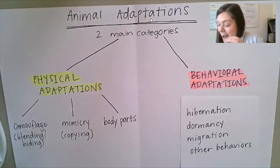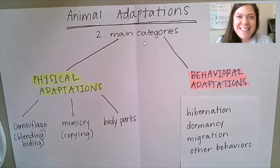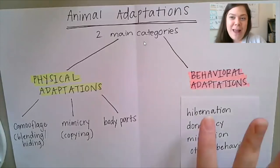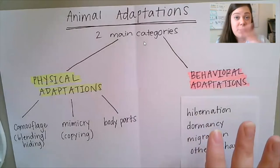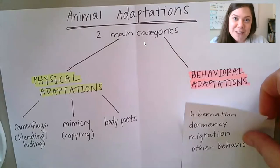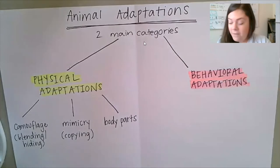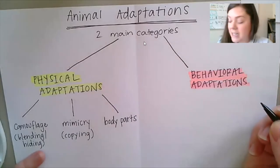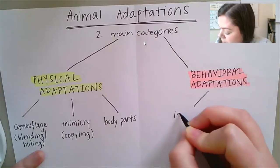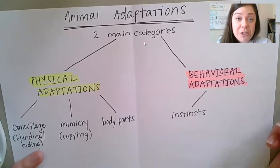Now, it's through a combination of both physical and behavioral adaptations that all living things are able to thrive. Today, we're going to take the idea of behavioral adaptations one step further. Behavioral adaptations can also be divided into two distinct categories. I'm going to remove our list from last week so we can build our next layer of our flowchart. One of those categories of behavioral adaptations are instincts, and the second category are learned behaviors.